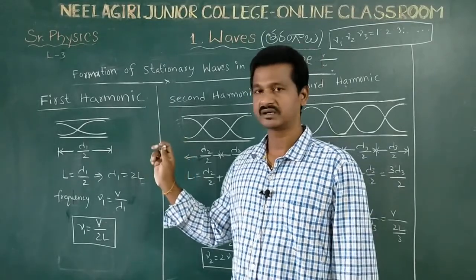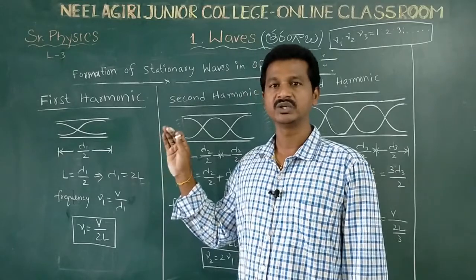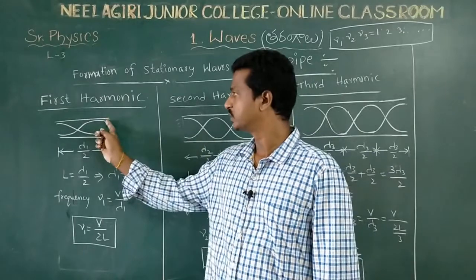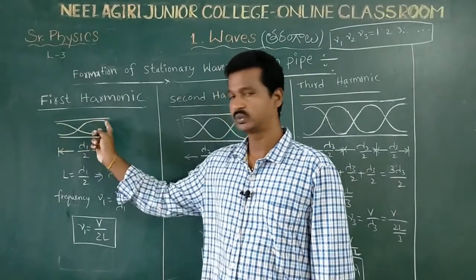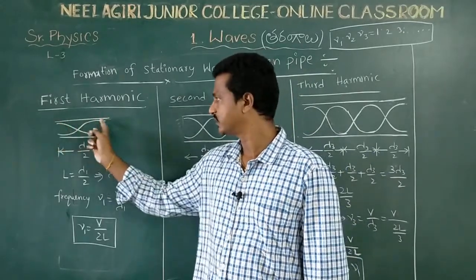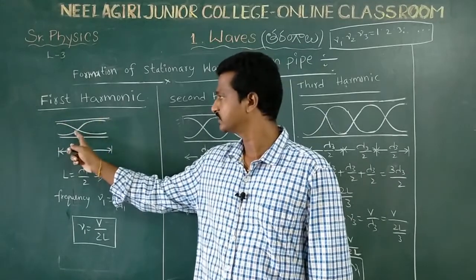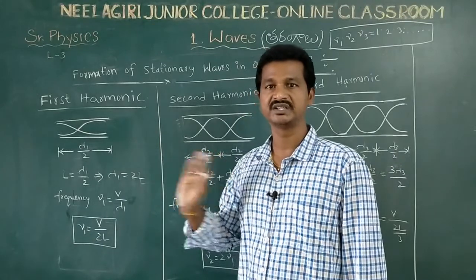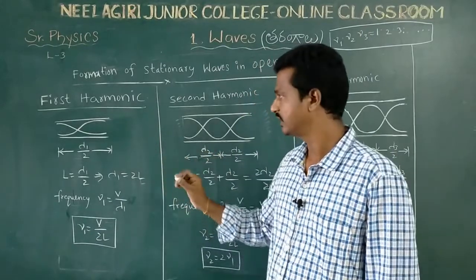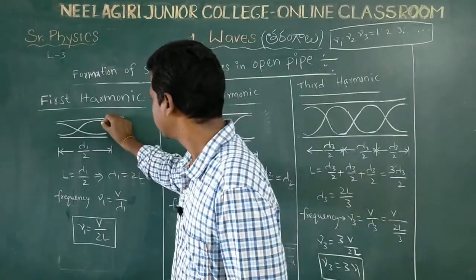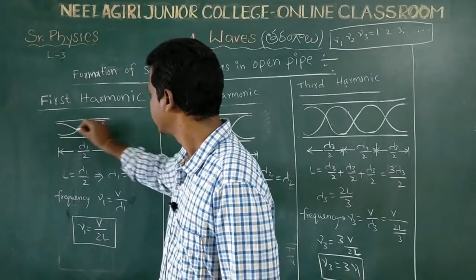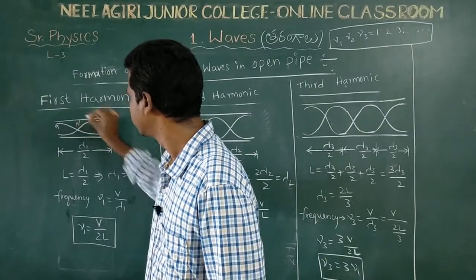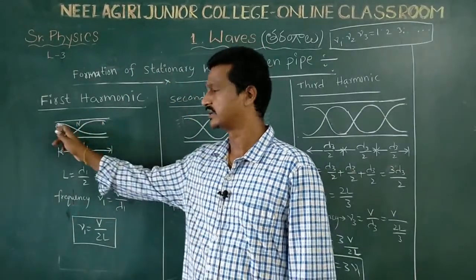The first harmonic gives the lowest possible vibration frequency. If the two ends are compulsory antinodes — antinode and antinode — then the next harmonic can run. In the first harmonic, the lowest moment is there. So, the compulsory condition is antinode at both ends.